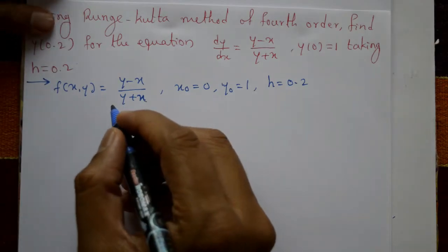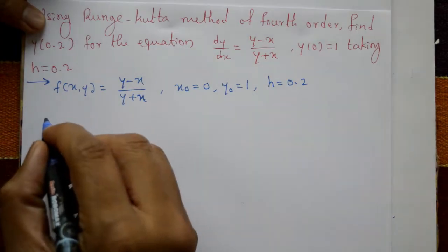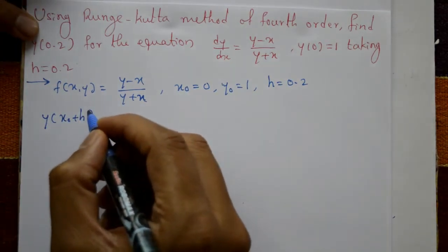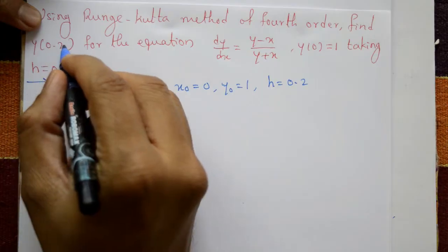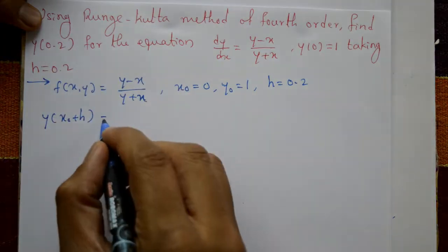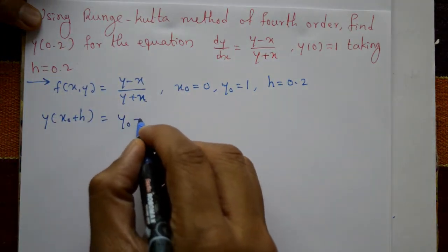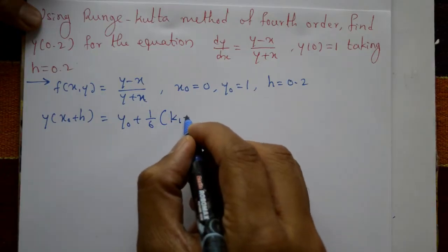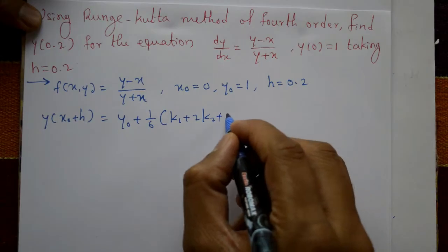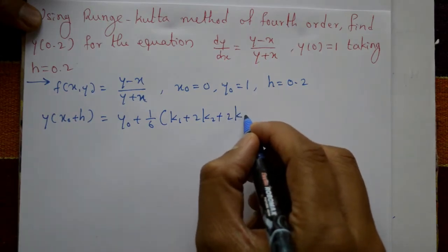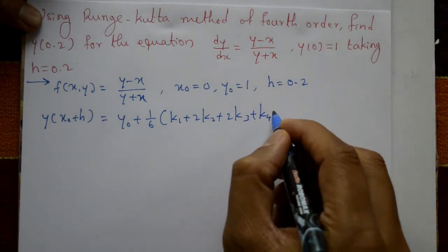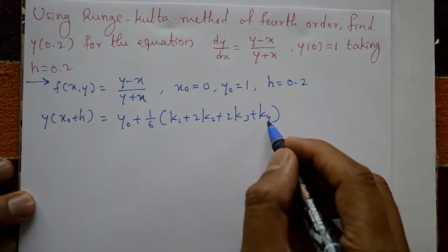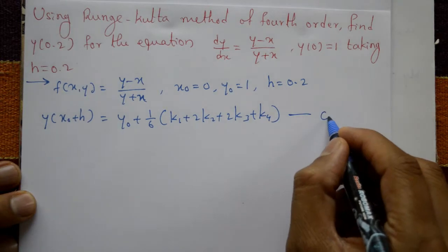The RK4 method formula to calculate y(x naught + h), which is y(0.2), is: y(x naught + h) equals y naught plus one-sixth times k1 plus 2k2 plus 2k3 plus k4. We need to find k1, k2, k3, and k4 and substitute into this equation — call it equation number 1.